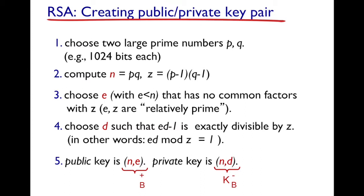We also choose d such that ed − 1 is exactly divisible by z — that is, when ed − 1 is divided by z it leaves no remainder, or equivalently, ed mod z = 1.